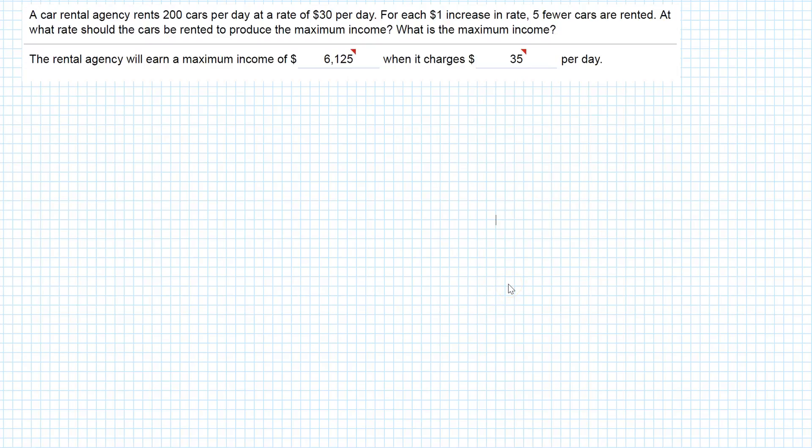For this optimization problem, we're trying to maximize income. If you remember from previous videos, the first thing I need to do is come up with a function, then take the derivative, set the derivative equal to zero, and figure out what to do with my answer.